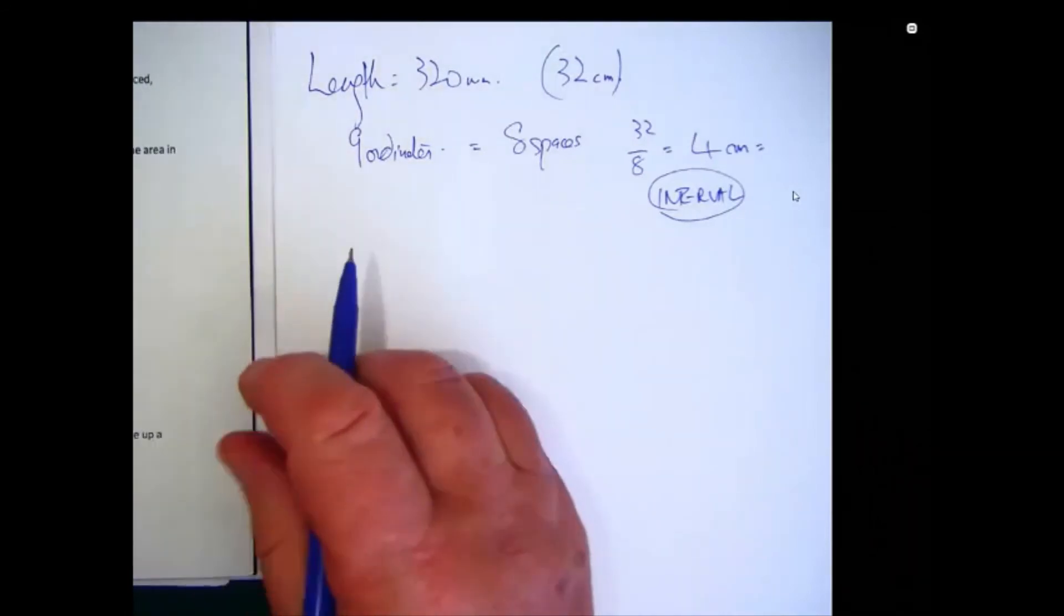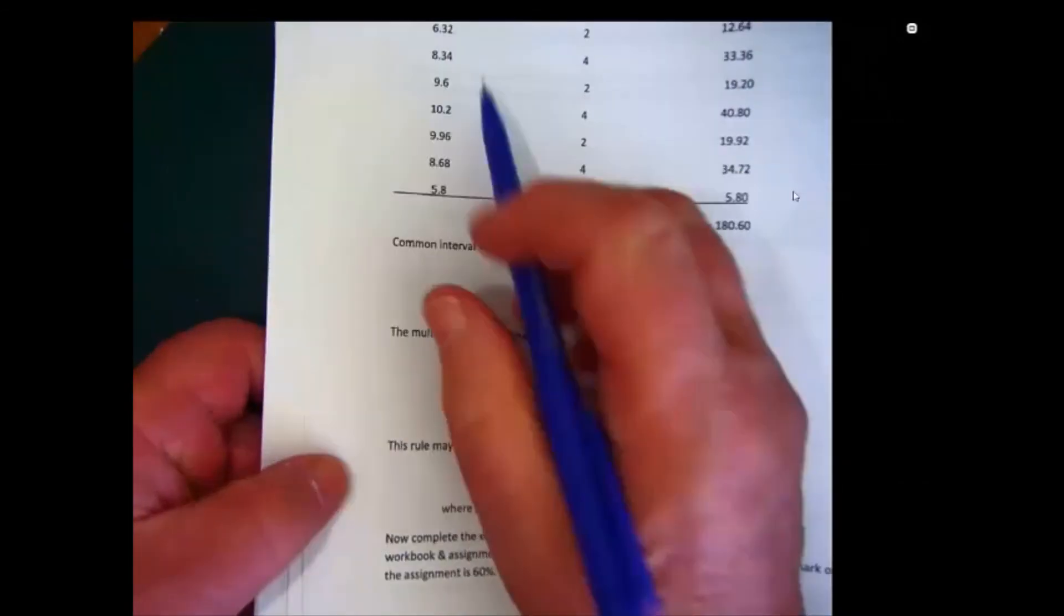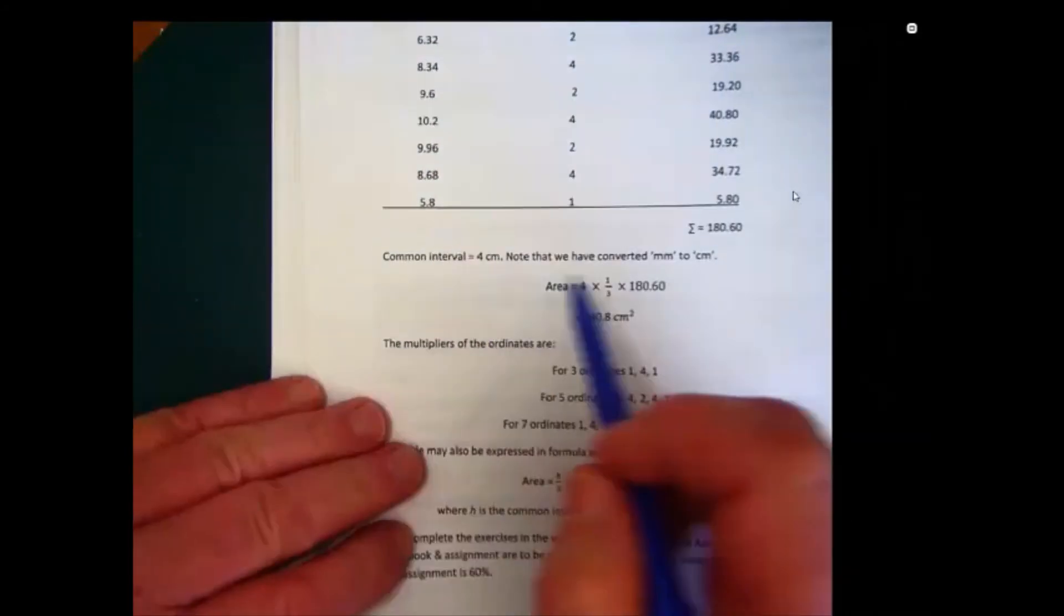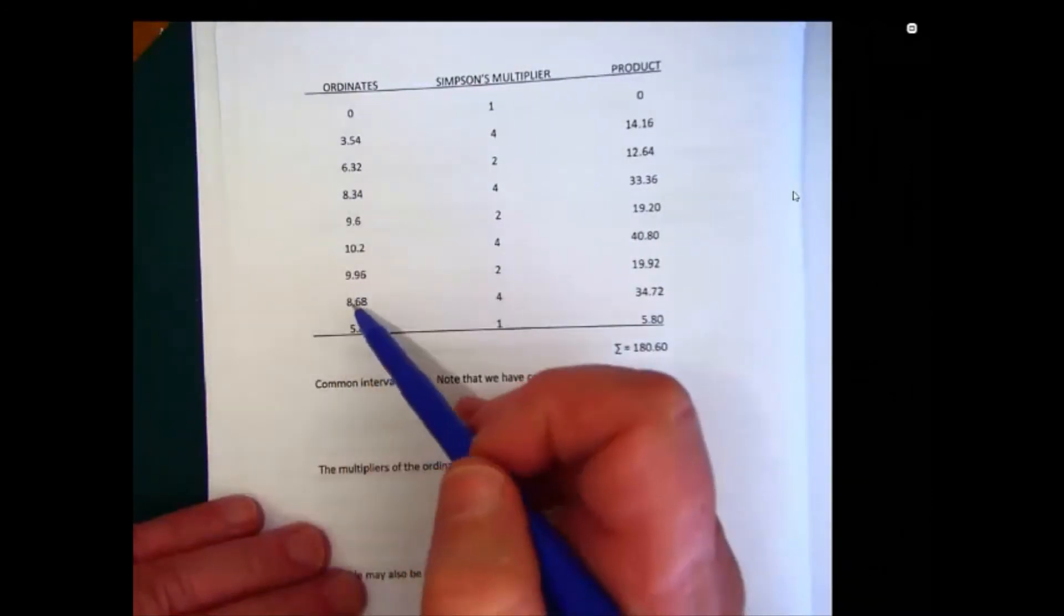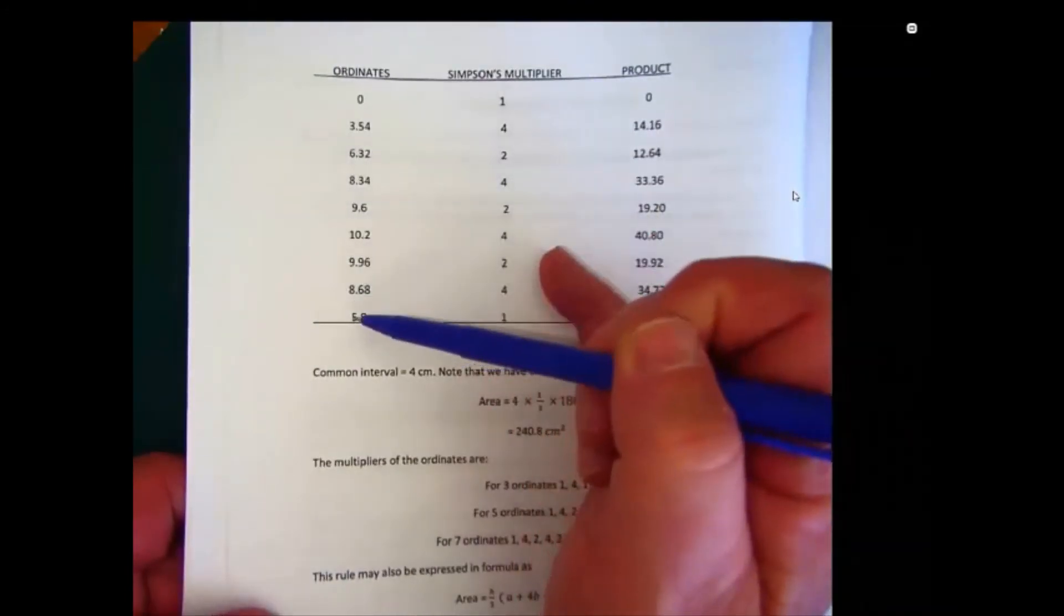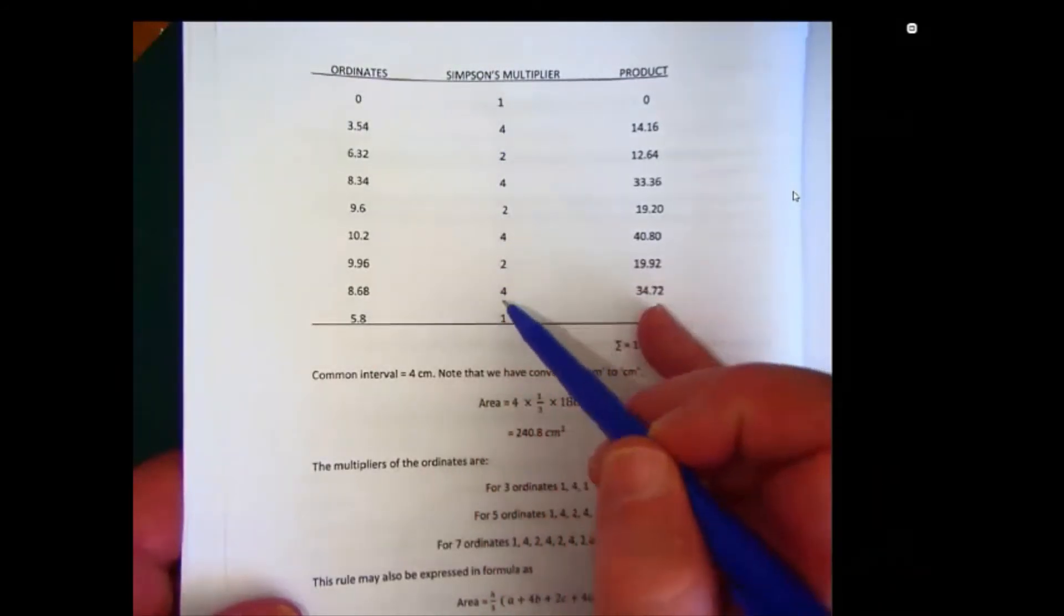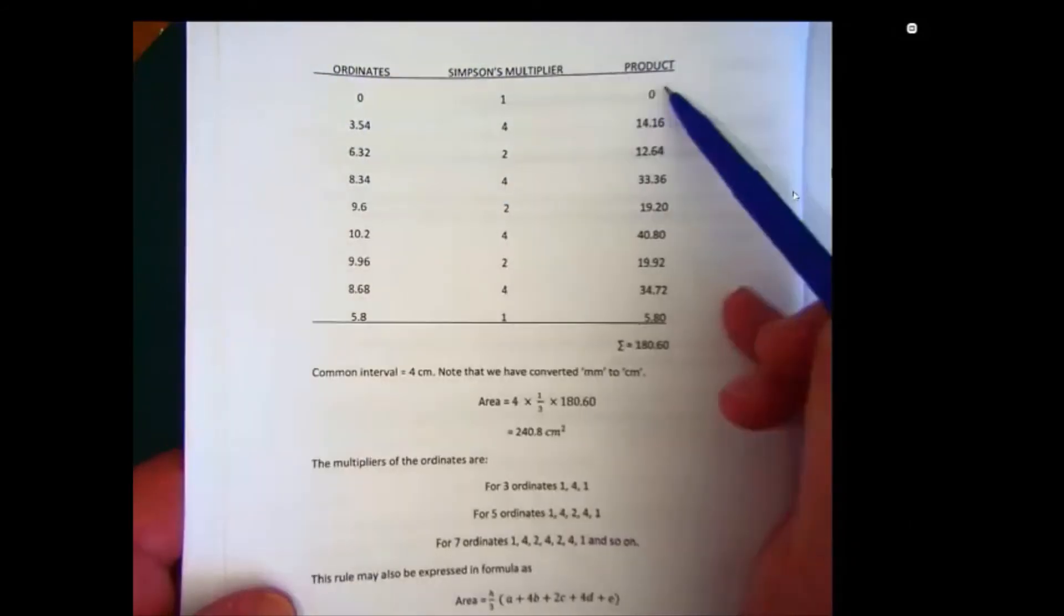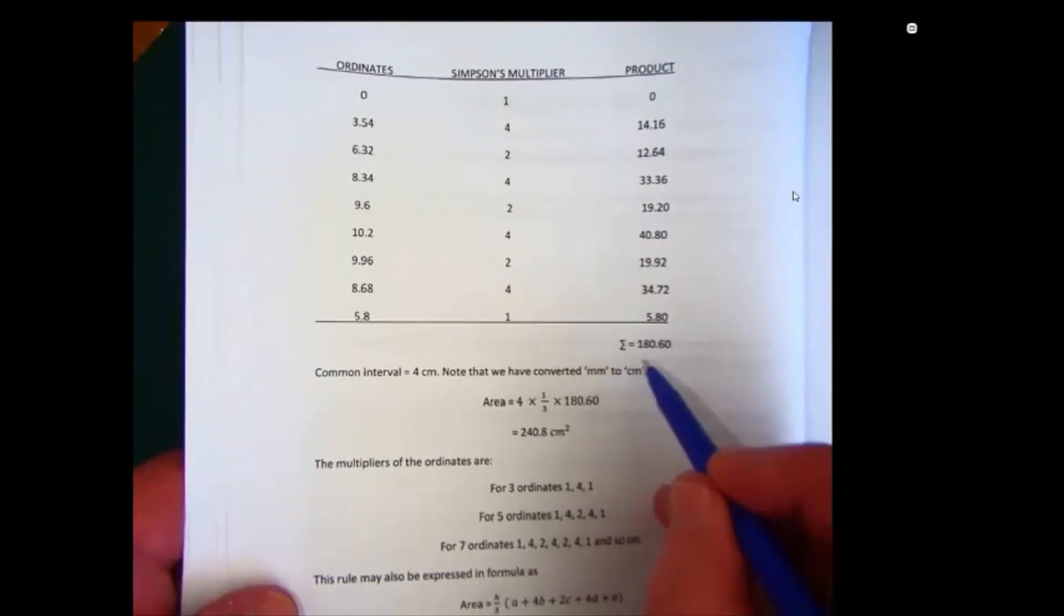So we make a table of values. So what we now do is quite simply write all these ordinates out. Now you might notice that we've converted the millimeters to centimeters, because the answer was in fact required in centimeters. So we've put the ordinates down very carefully. Now the Simpson's multiplier starts with 1. It's 1, 4, 2, 4, 2, 4, 2, 4, and finishes with 1. What we now do is multiply the two together to give the so-called product. And sigma, this is the Greek capital S sigma, is 180.6.